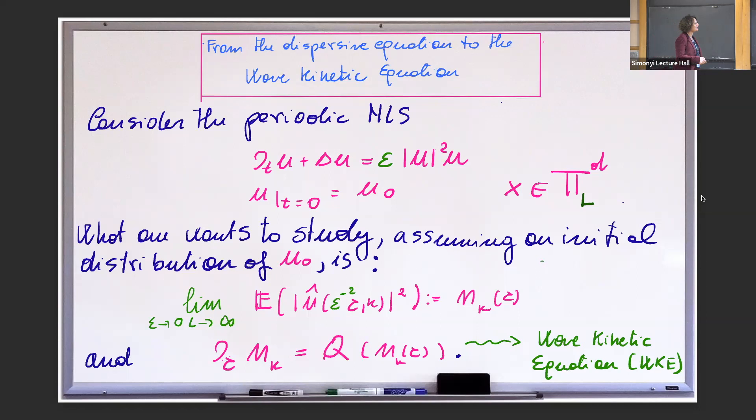These parameters epsilon and L are going to appear throughout the talk. I realized when looking at the talk that later on this L will become capital D. What we want to study, given our initial data, is what happens to the Fourier coefficients. That's what people call studying the energy spectrum of your system.